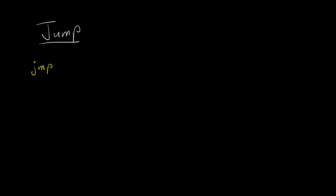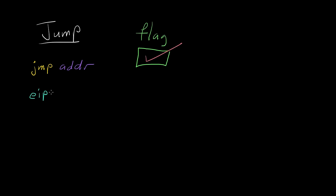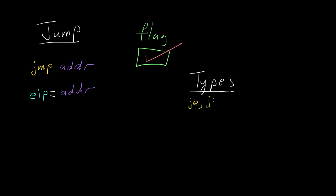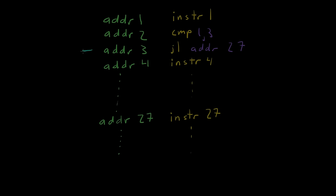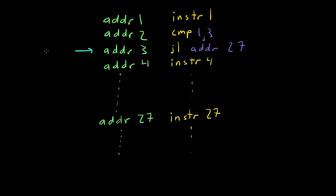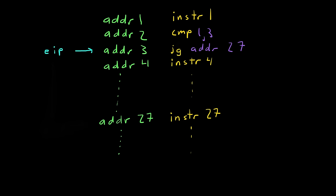Compare instructions are always followed by a jump instruction. Every jump instruction takes an instruction address as its argument. It will check the current state of the flag and, depending on the state, set the instruction pointer to its argument. There are many types of jump instructions — some include jump if equal to, jump if not equal to, and jump if greater than. So if the instruction CMP 1, 3 was followed by jump if less than, the jump would be taken. If instead we had jump if greater than, the jump would not be taken and the instruction pointer would simply move on to the next instruction.